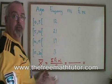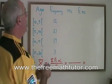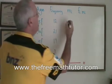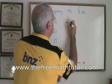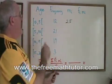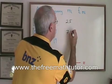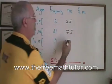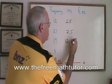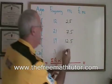0 plus 5 is 5, and 5 divided by 2 is 2.5, so the midpoint of this first class is 2.5. The second class, the midpoint is 7.5, then we have 12.5, and finally we have 17.5.